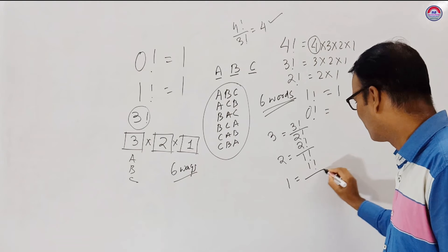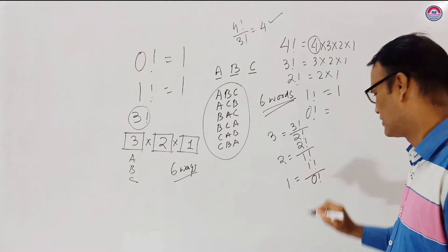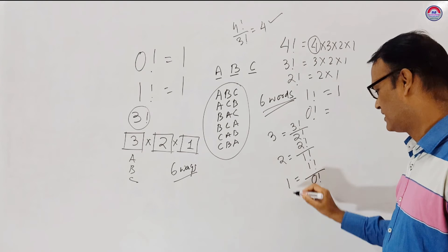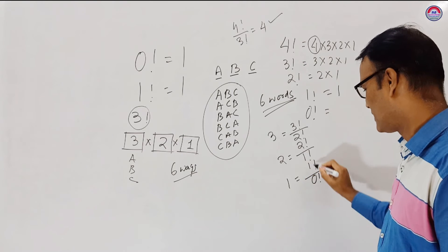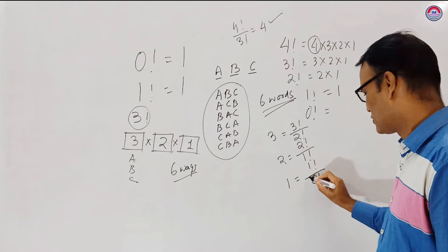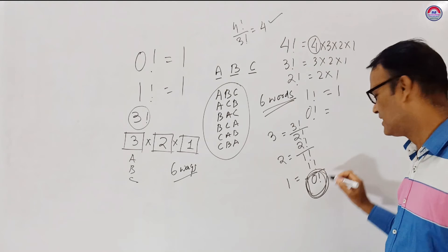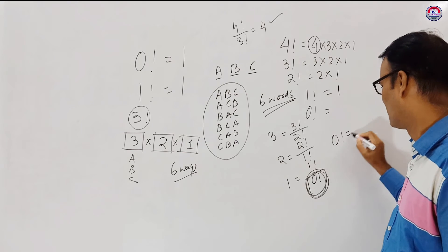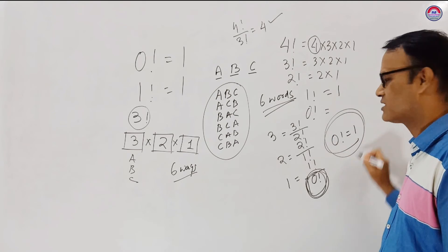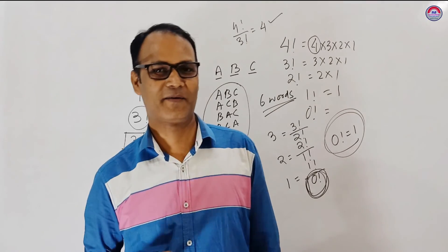By zero factorial. You see here, one is equal to one factorial by zero factorial. So what is the value of zero factorial? The value of zero factorial is equal to one.